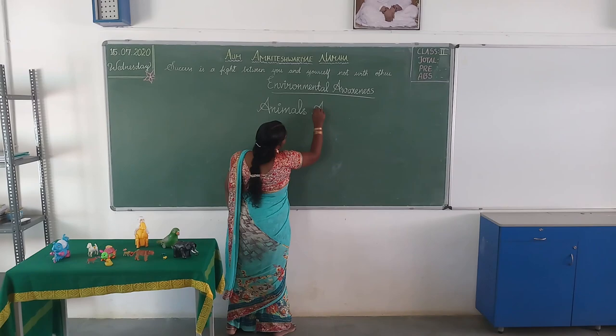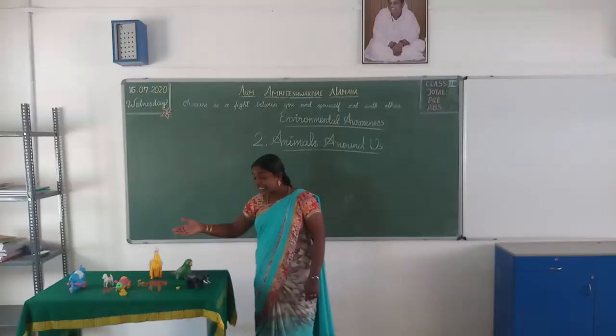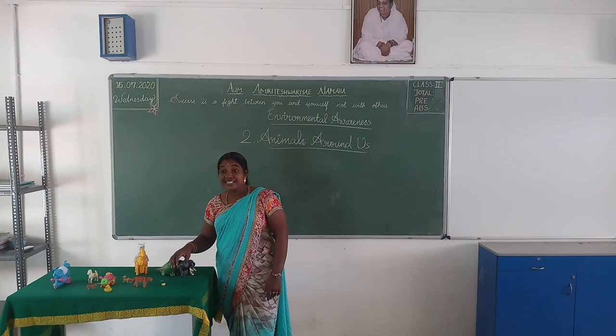Animals around us. There are many animals around us. Animals are not all the same. The animals are of different shapes, different colors, and different sizes. Isn't it?